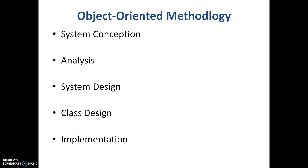When it comes to object-oriented methodology, the different stages involved in software development are: system conception, analysis, system design, class design, and implementation. System conception is how you come up with the idea of developing a software — it could be based on client requirements, something totally new, or automating things that are going on manually.